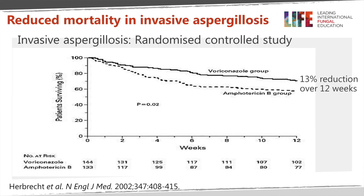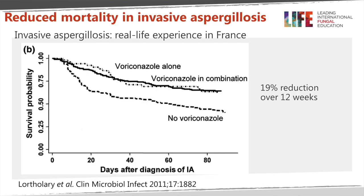The landmark study completed in 2001 and published in 2002 compared voriconazole with conventional amphotericin — which could be switched to liposomal amphotericin for toxicity. This showed a 13% reduction in mortality over 12 weeks, which was the first time improved survival was demonstrated in a randomized clinical trial of any fungal infection. In follow-up non-randomized data from the whole of France, usage of voriconazole alone or with anything else was better than not receiving voriconazole, with improved survival seen early in the course — particularly in the first two weeks.